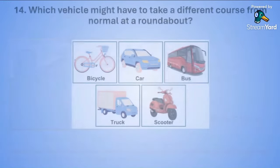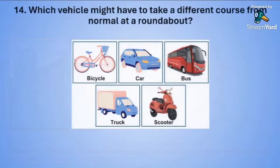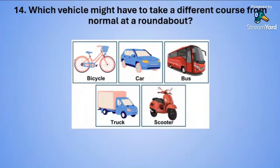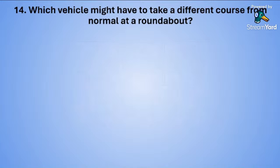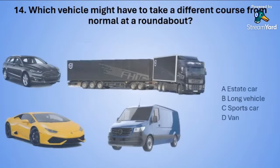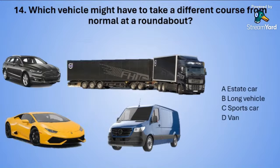Question fourteen: Which vehicle might have to take a different course from normal at a roundabout? A: an estate car. B: a long vehicle. C: a sports car. Or D: a van.